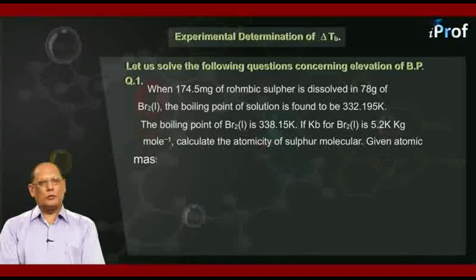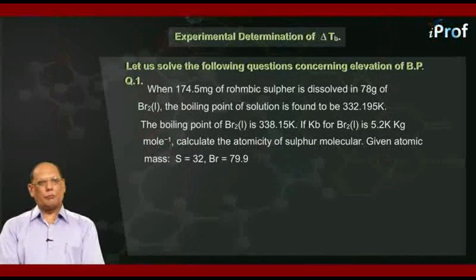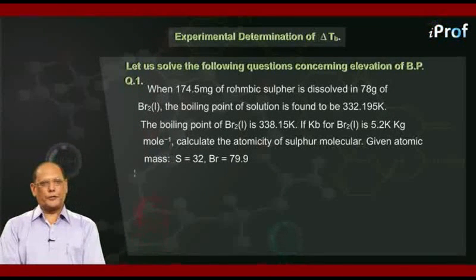Given that atomic masses are: sulfur equal to 32 and bromine equal to 79.9. With the help of given data, let us try to solve this question.